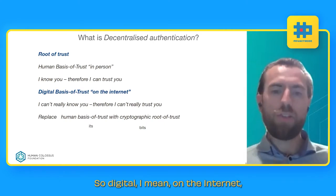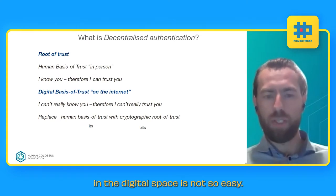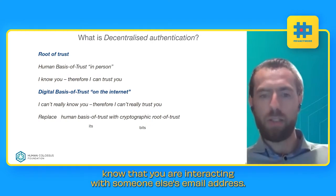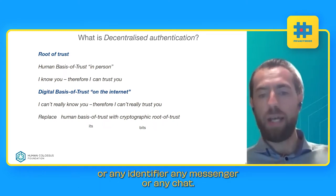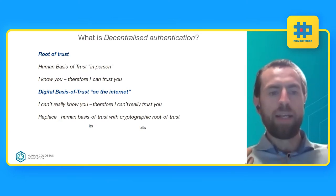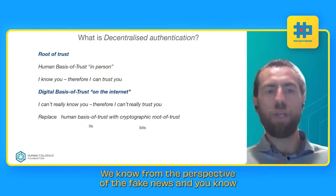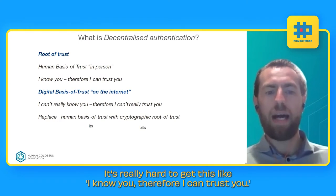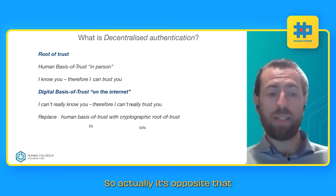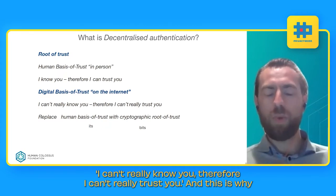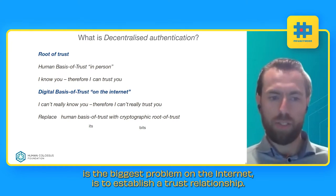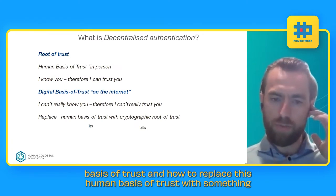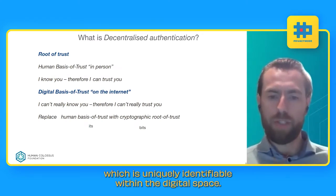The problem with the digital basis of trust on the internet is that it's not so easy. You can't really know someone on the other side of a screen. You might know you're interacting with an email address, but you don't know if that's a real person behind it. On video conferences, we know from the perspective of fake news and what AI can do with video editing, it's really hard to get that 'I know you, therefore I trust you.' It's the opposite — I can't really know you, therefore I can't really trust you. This is the biggest problem on the internet: establishing trust. We need to replace this human basis of trust with something uniquely identifiable in the digital space.